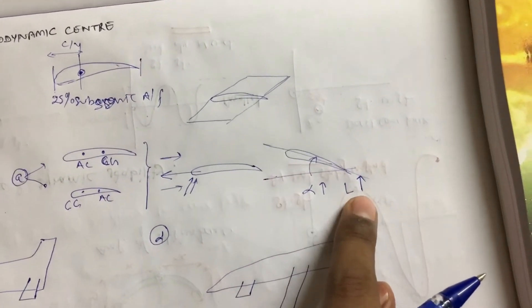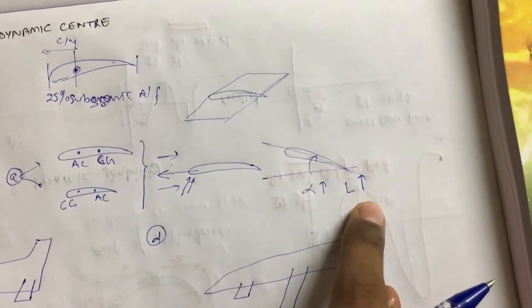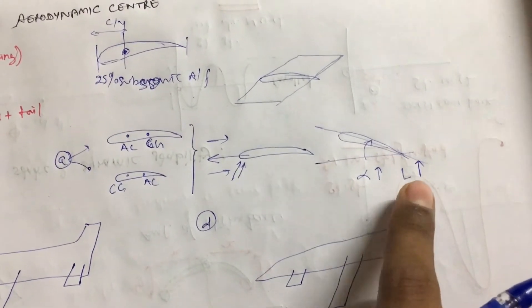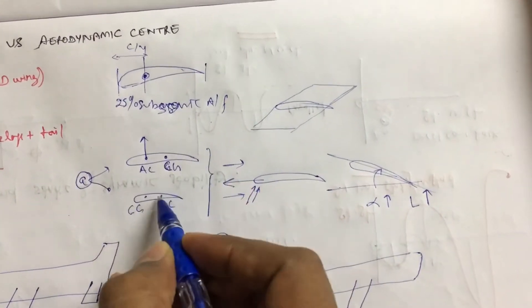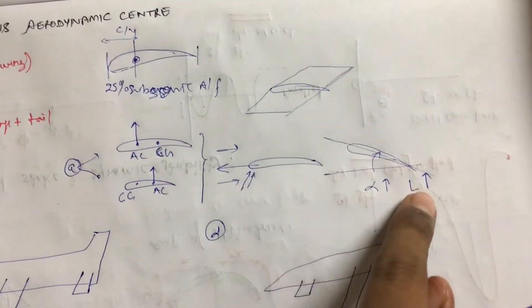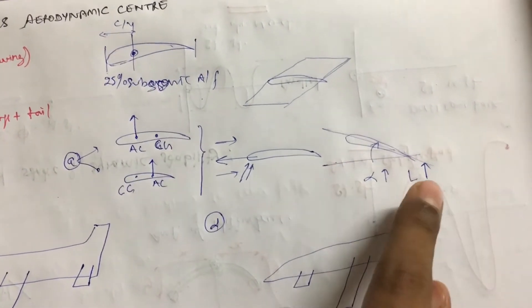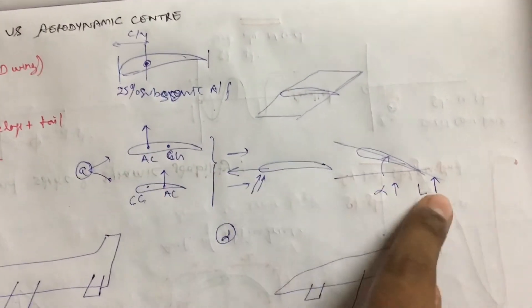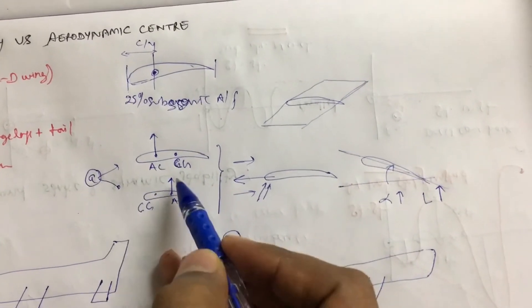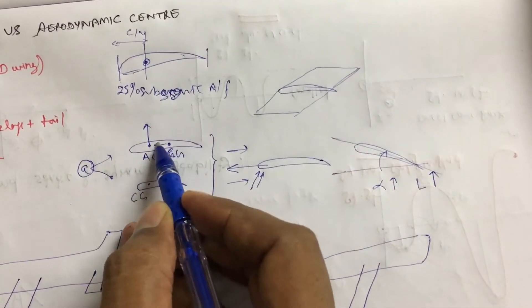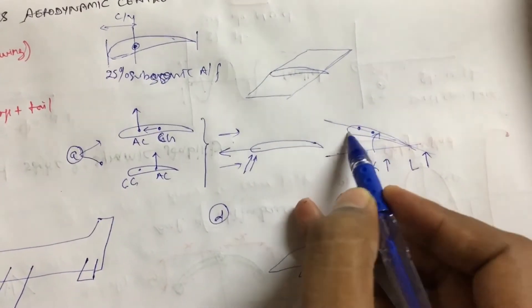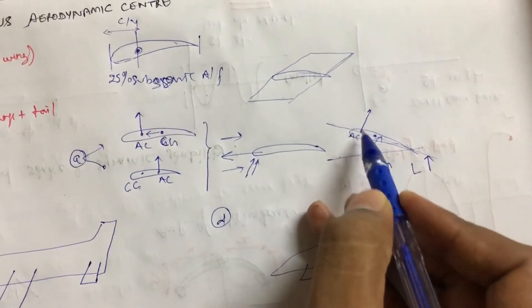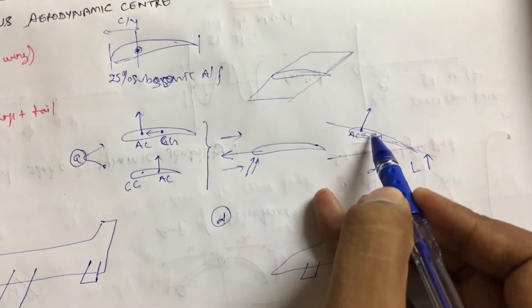And if lift will increase, where is this lift acting? In this video I will not explain what AC is — for now, consider that lift will act on the AC. This extra lift, which is coming because of the increment in angle of attack, will always work on the AC. Now, if your AC is in front and CG is here, then you will be getting one extra moment. This is the lift, and this is the distance from the AC, so lift times this distance will give you a moment.